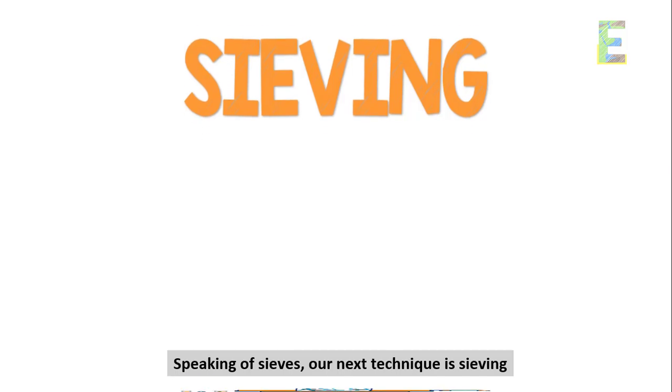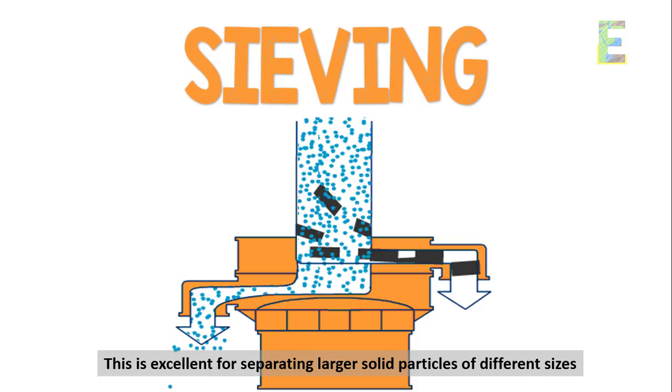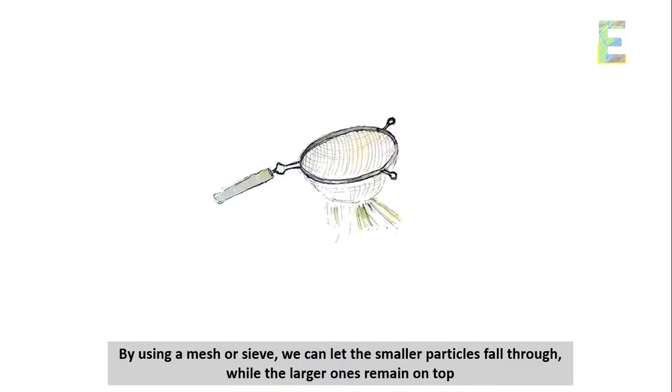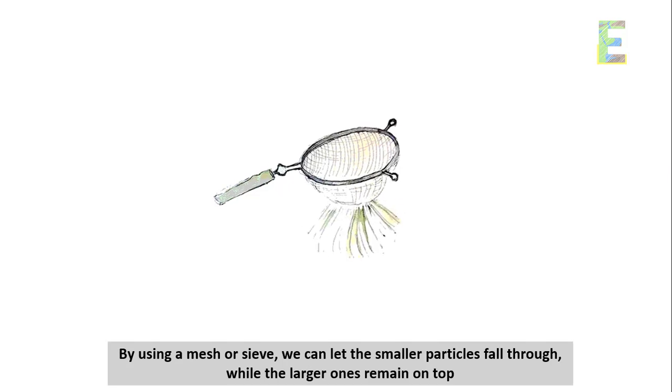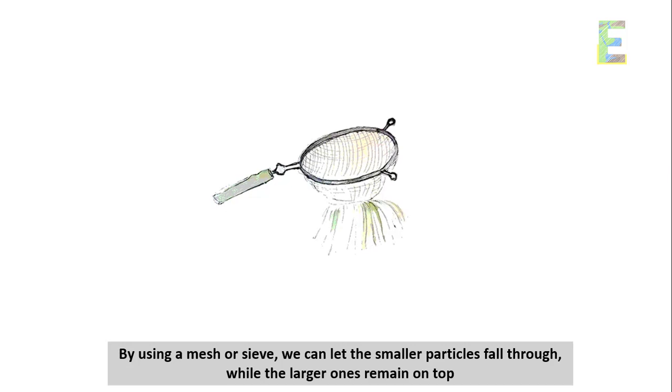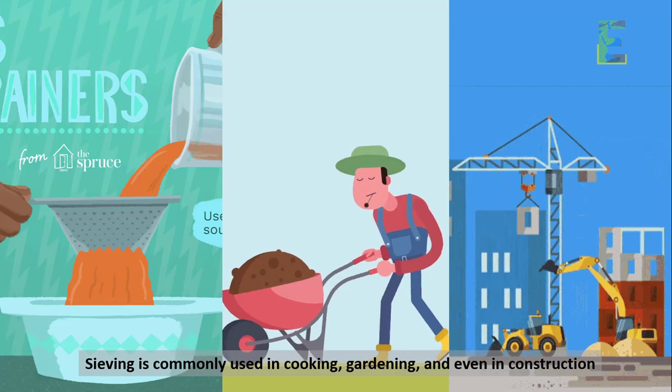Sieving. Speaking of sieves, our next technique is sieving. This is excellent for separating larger solid particles of different sizes. By using a mesh or sieve, we can let the smaller particles fall through while the larger ones remain on top. Sieving is commonly used in cooking, gardening, and even in construction.